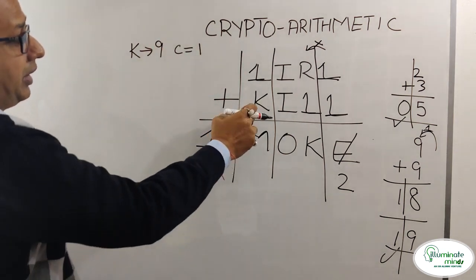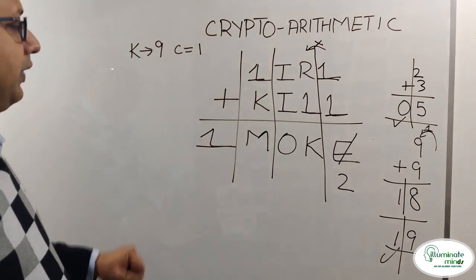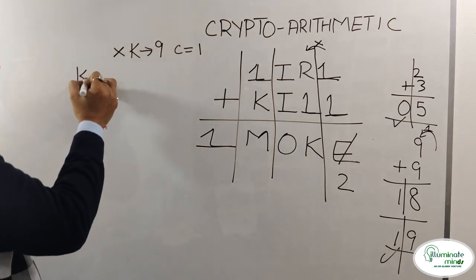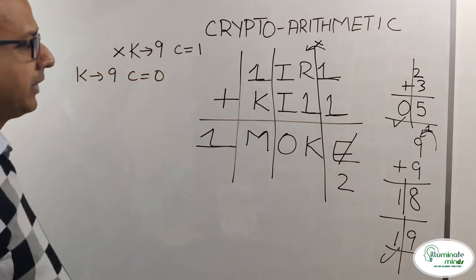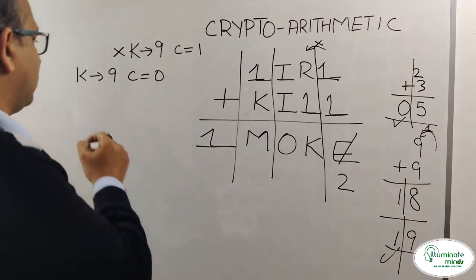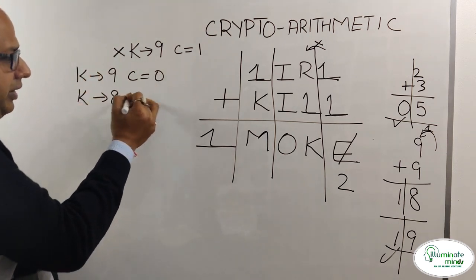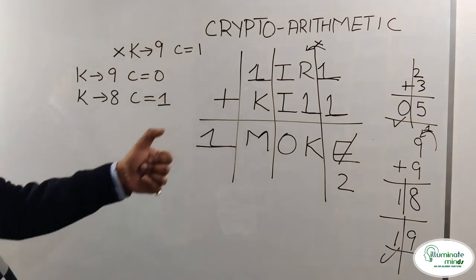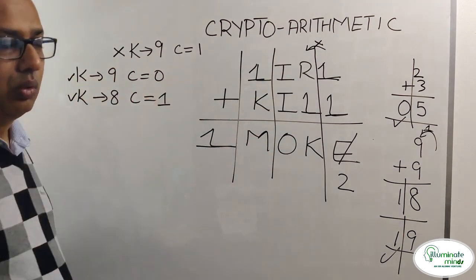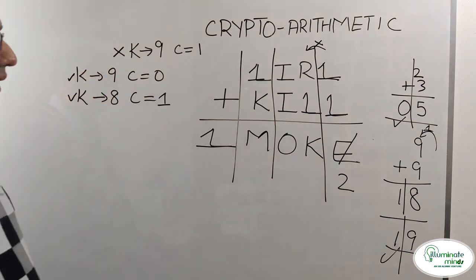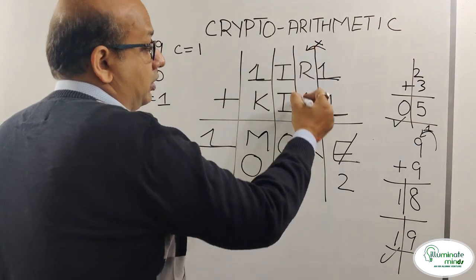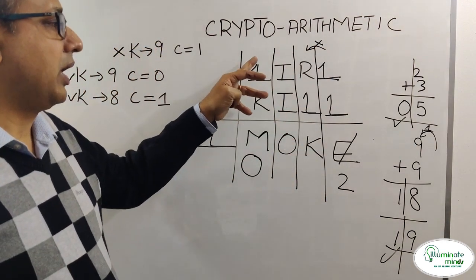If K is 9 and there's a carry-over of 1 from behind, then 9 plus 1 plus 1 gives 11, meaning M would be 1 — but that's not possible since L is already 1, so this case is eliminated. The next case: K is 9 with no carry-over from behind, so 9 plus 0 gives 10, making M equal to 0 — that's possible. Another possibility: K is 8 with a carry-over of 1, so 8 plus 1 plus 1 gives 10, and M is again 0. So in both valid cases, M equals 0, depending on whether I plus I produces a carry-over.